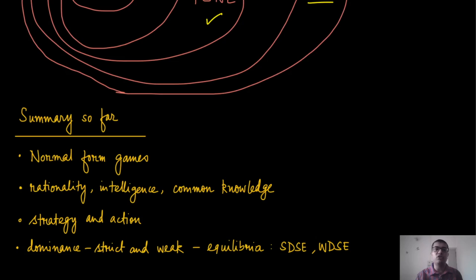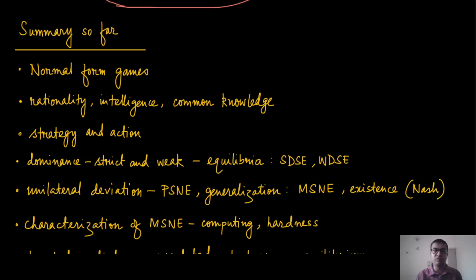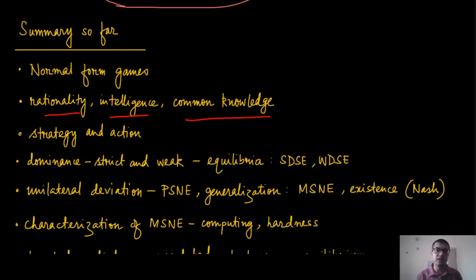Let me summarize all points discussed in the context of normal form games. Before formally defining normal form games, we talked about rationality, intelligence, and common knowledge. These are general ideas that may vary depending on context. Here we saw that we tweak the idea of rationality: instead of playing independently, playing with a mediator or randomizing device can be better because it gives players more expected utility. That is how rationality evolves depending on which kind of settings you are looking at.